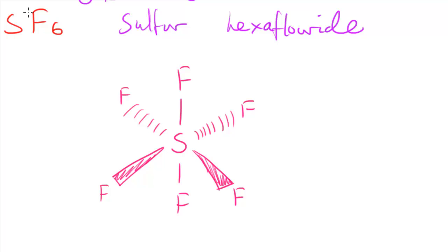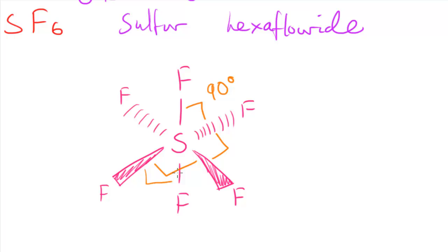Let's look at the bond angles in SF6. All the bond angles are equal. If you imagine fitting this molecule inside a cube, this angle here is 90 degrees — and all angles between neighboring fluorine atoms are 90 degrees. This is a very symmetrical molecule with lots of 90-degree angles.